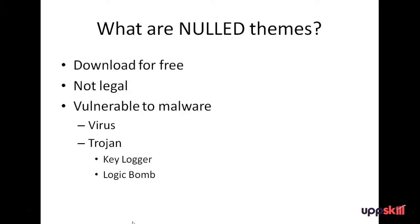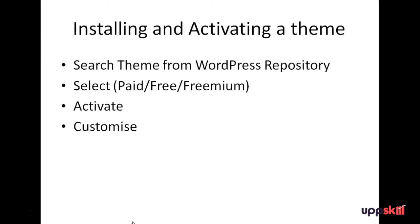Always use a theme that is legally available for free if you are looking for a free theme. For installing and activating a theme on your site, you need to search for the theme on the WordPress repository, select the theme — whether it is a paid theme, free theme, or freemium theme — then activate it and customize it for the layout as per your requirements.